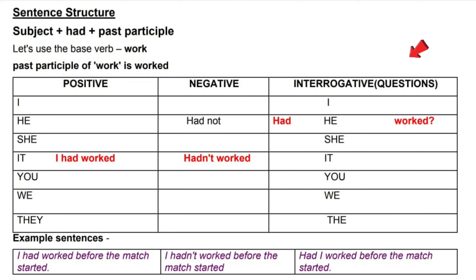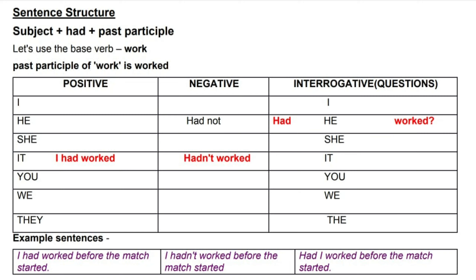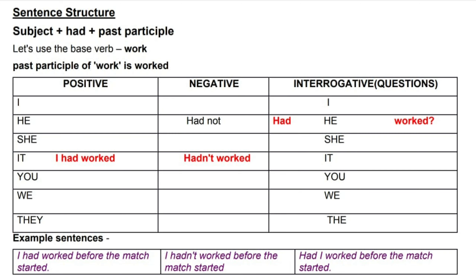Moving on to interrogative sentences, we change the order of the words by putting 'had' before the subject. So we say: 'Had I worked?' 'Had you worked?' Our example sentence is: 'Had I worked before the match started?'